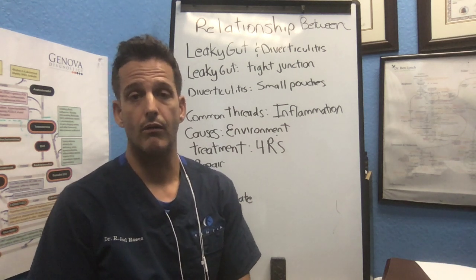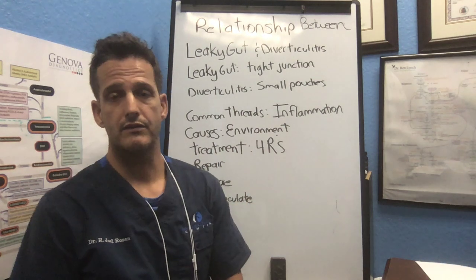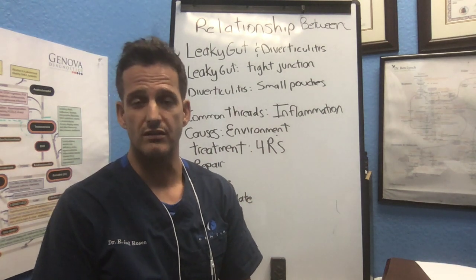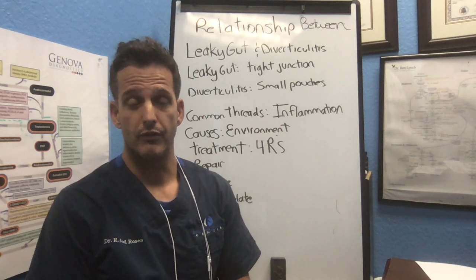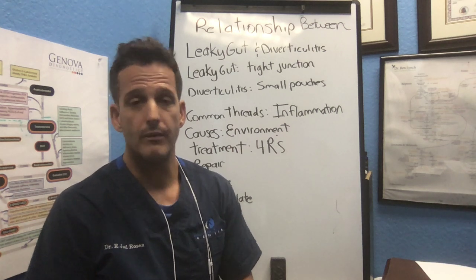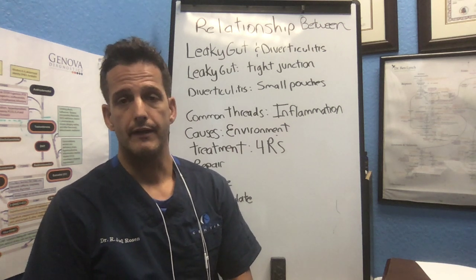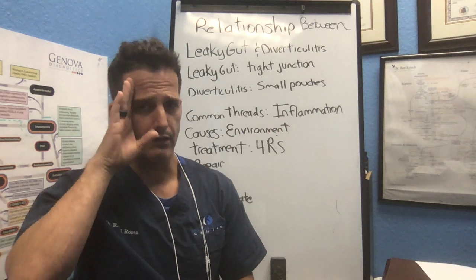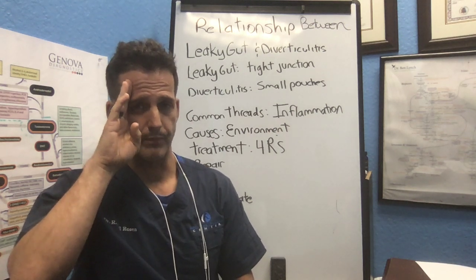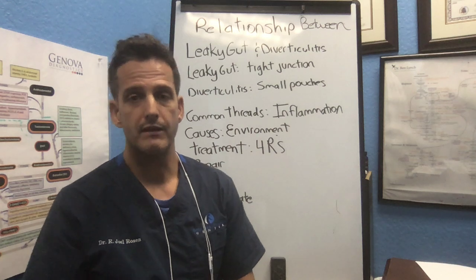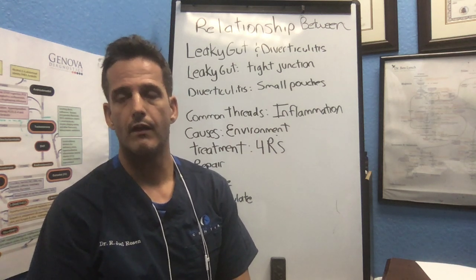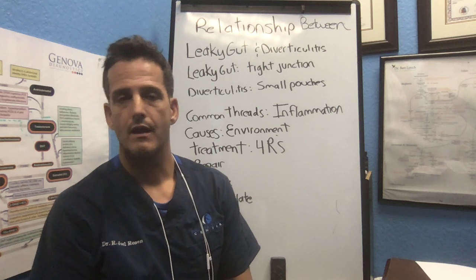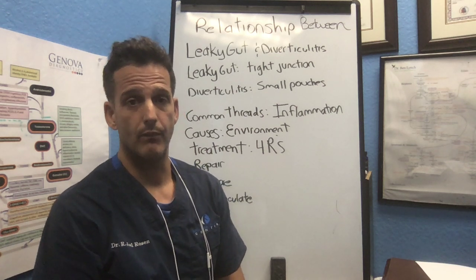Here's the thing: you can address both of them using what we call the Four R's. The first is Repair — repairing the tight junctions or the inflammatory destruction of those small pouches as well. Glutamine is a great nutrient; it doesn't just target one area, it goes all over. So glutamine, slippery elm, chamomile, and a lot of different nutrients like that can be very, very helpful.